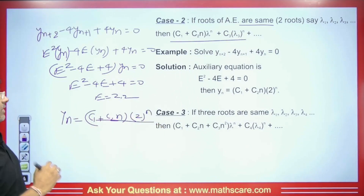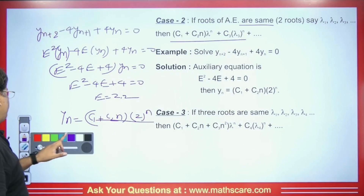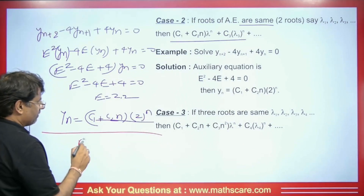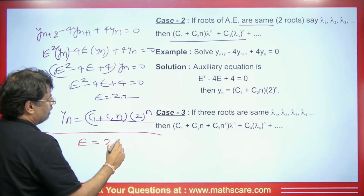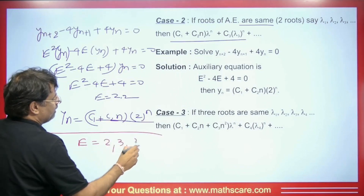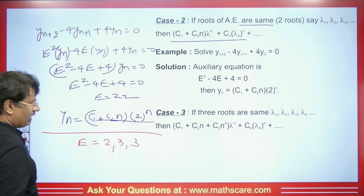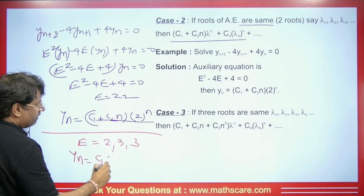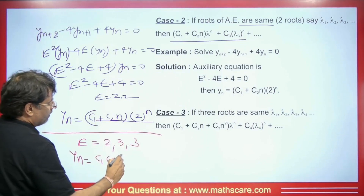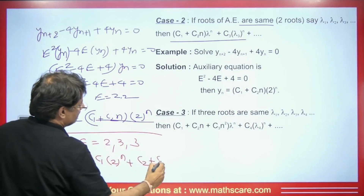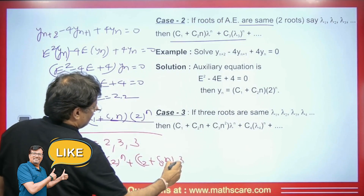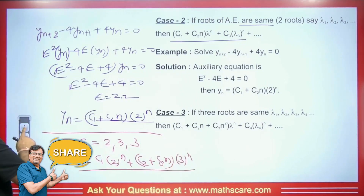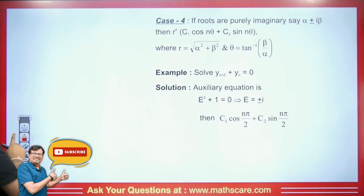Let me take an example. Suppose we have an equation with roots 2, 3, and 3. In this case, what will be the CF? The equation will be yn = C1·(2)^n + (C2 + C3·n)·(3)^n. This is what we will get — the CF. In this way, we can understand repeated roots easily.